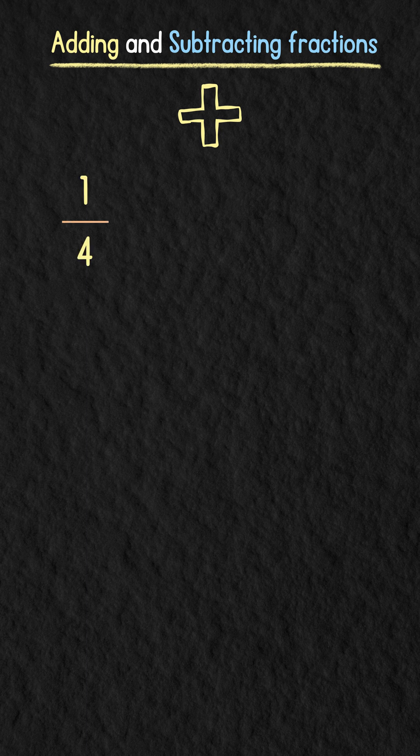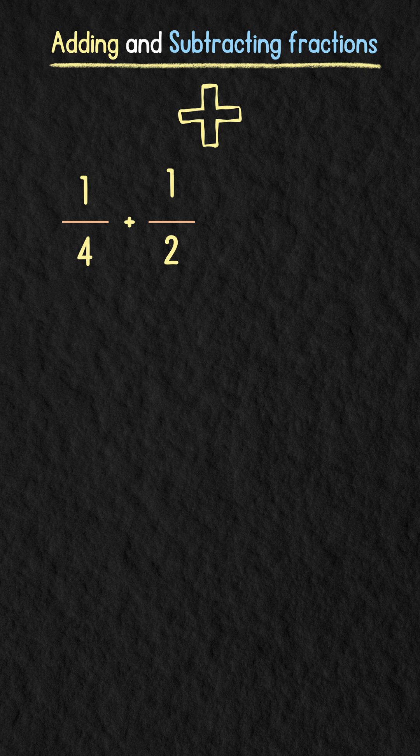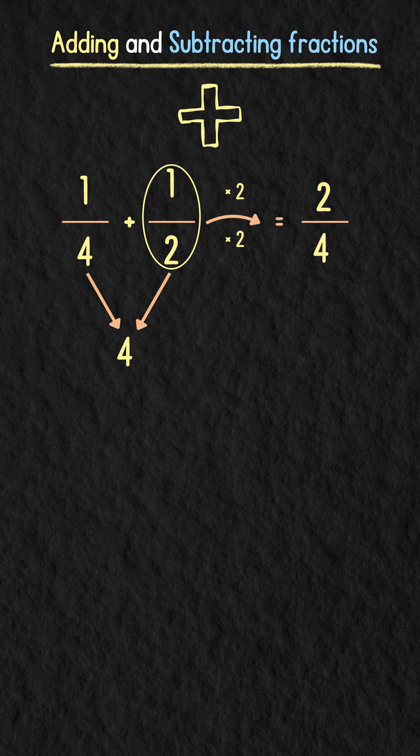To add 1 over 4 and 1 over 2, we need to take LCM of denominator. Since LCM of 4 and 2 is 4, we can rewrite 1 over 2 as 2 over 4. Now we have 1 over 4 plus 2 over 4, which equals 3 over 4.